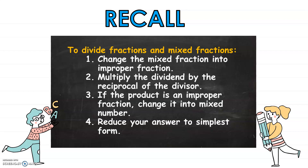So these are the steps that we'll follow. First, we change the mixed fraction into an improper fraction. Then, we multiply the dividend by the reciprocal of the divisor. Next, if the product is an improper fraction, we change it into a mixed number. And finally, we reduce our answer to simplest form.